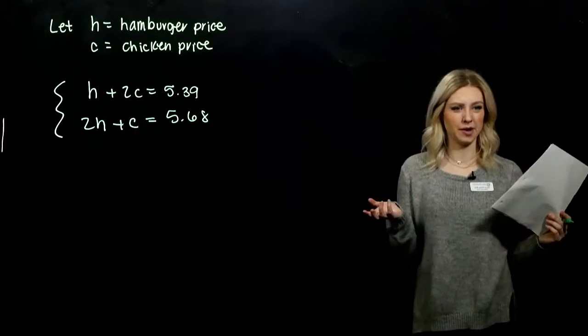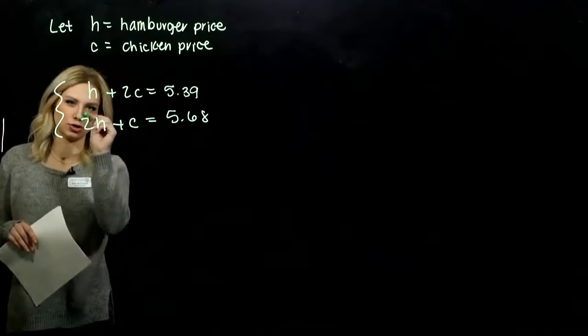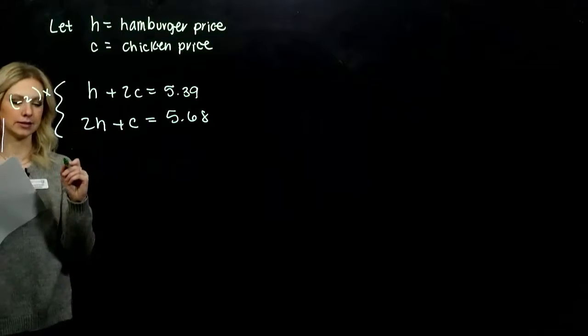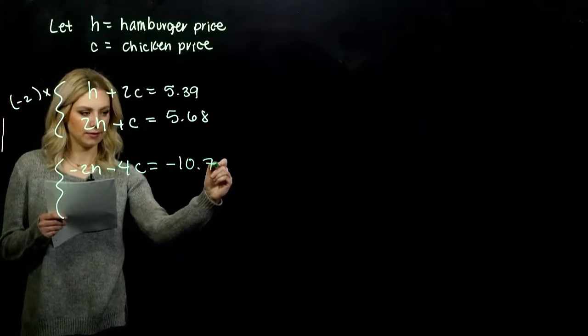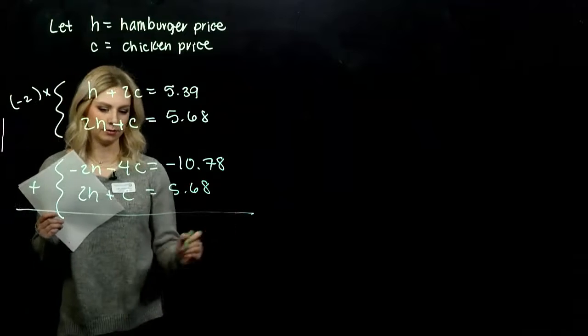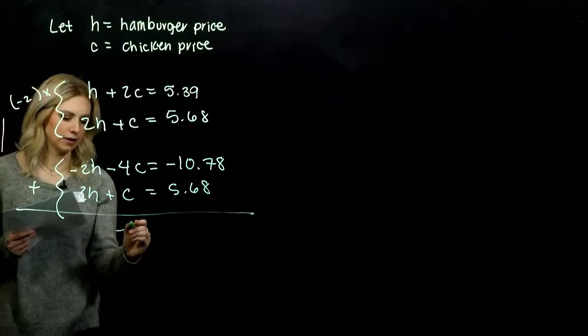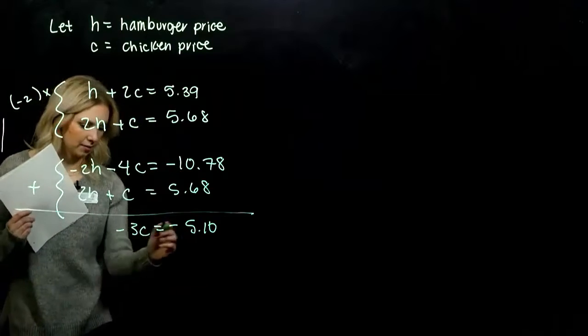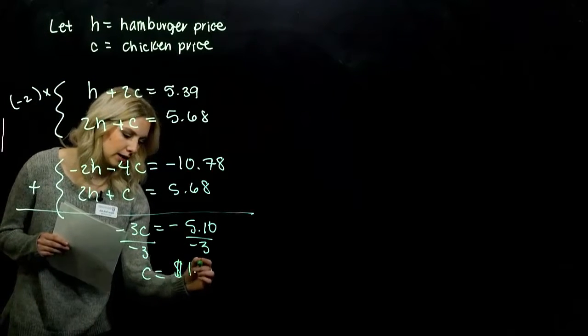I'm going to use the elimination method and get rid of H. So I'm going to multiply everything up here by negative 2. The equivalent system is going to be negative 2h minus 4c equals negative 10.78. When we add those together, those are gone, we're left with negative 3c equals negative 5.10. So chicken is $1.70 individual price.